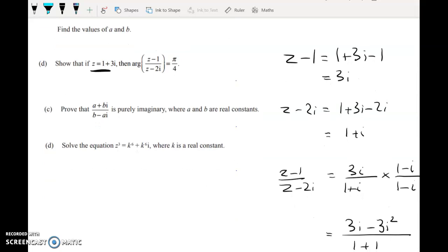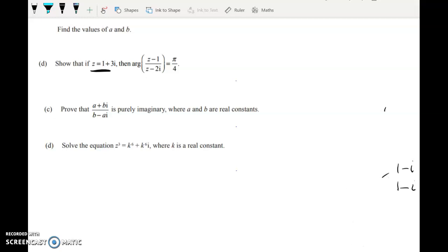Prove that this thing here is purely imaginary and a and b are real constants. So this question is one where we just have to work to get rid of the fraction by multiplying by the conjugate over the conjugate. So a plus bi over b minus a i is equal to a plus bi over b minus a i times b plus a i over b plus a i.